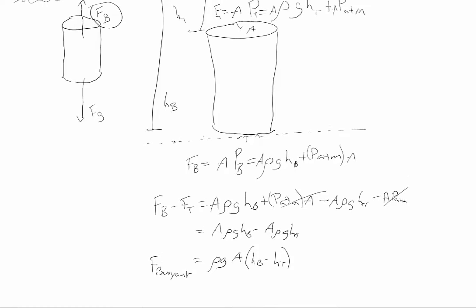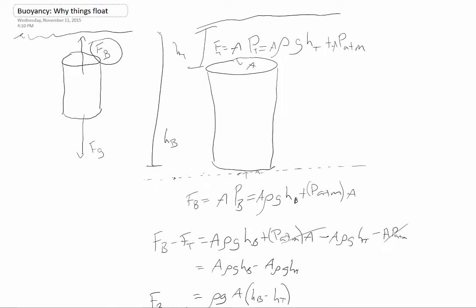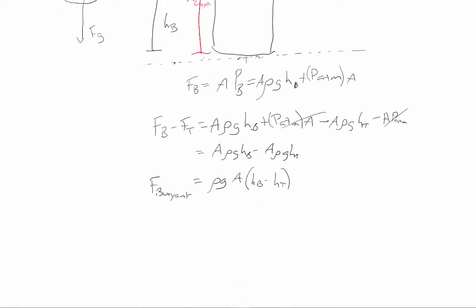The buoyant force is equal to ρg × A × (H_bottom − H_top). But H_bottom minus H_top is just the height of the can. And area times height of the can is just the volume of the can. So the buoyant force simplifies to ρg times the volume of the can.